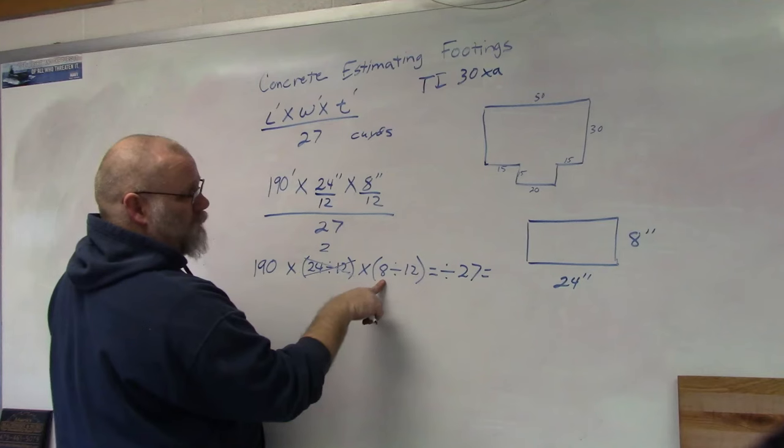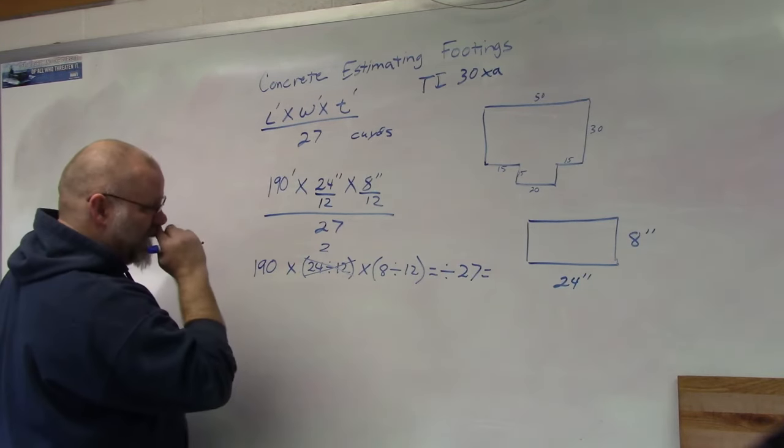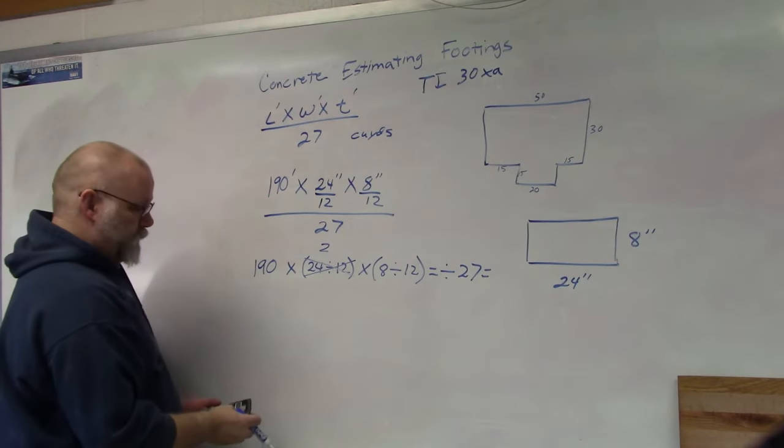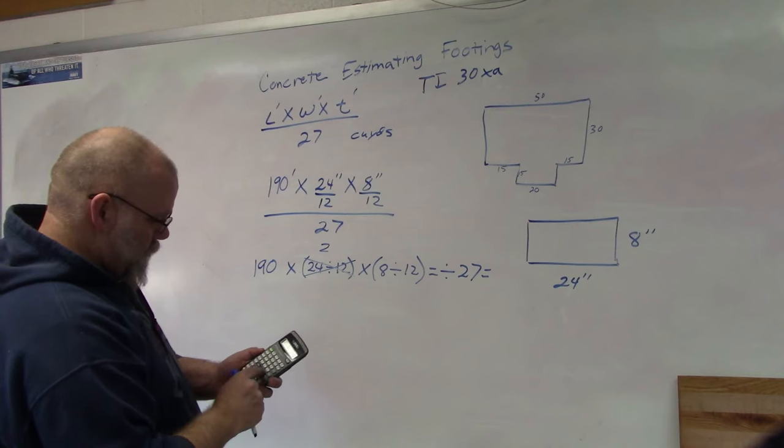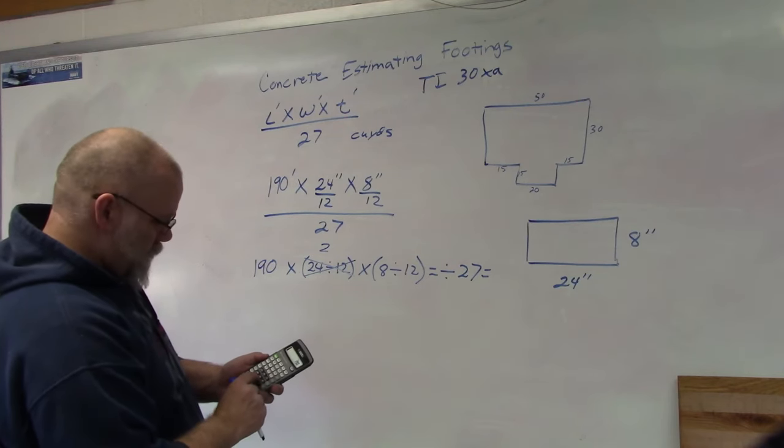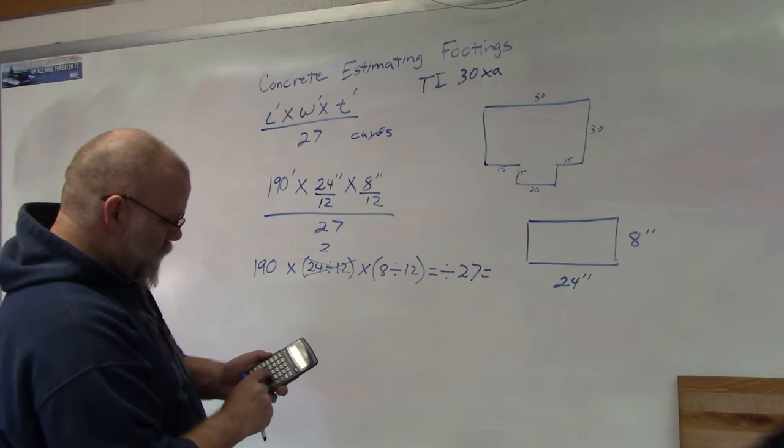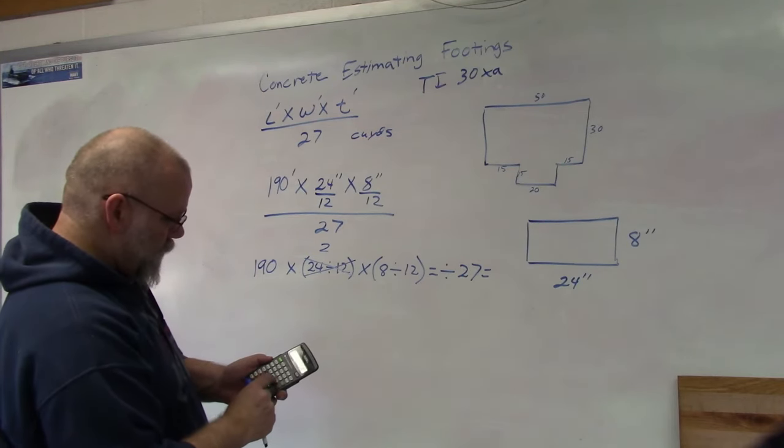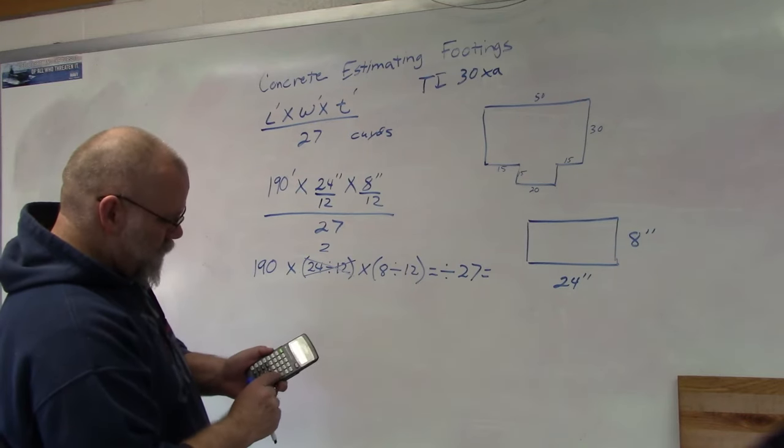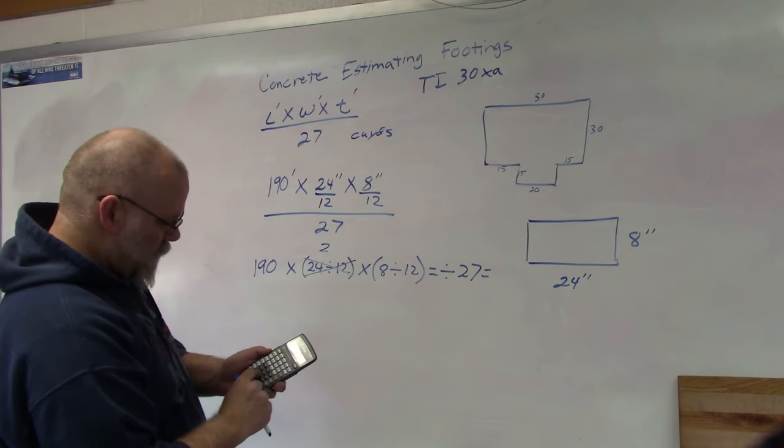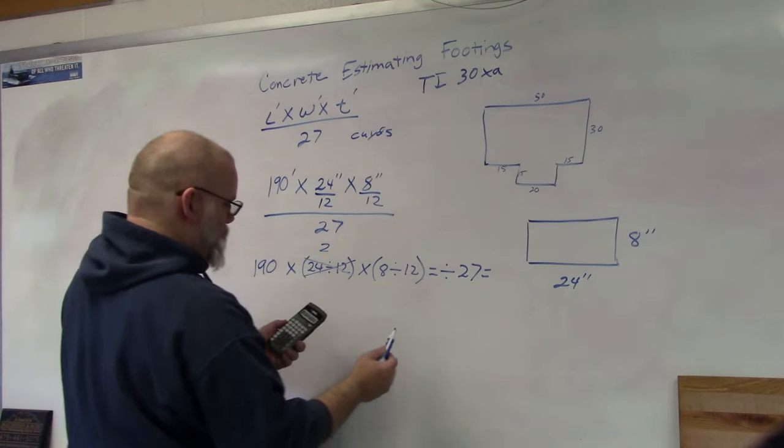But maybe you don't know what that one is, so you can leave it. So in your calculator, you're going to put 190 times 2 times, hit the parenthesis button, left parentheses, 8 divided by 12, right parentheses, equals, divided by 27, equals 9.38.